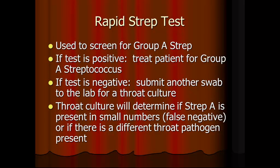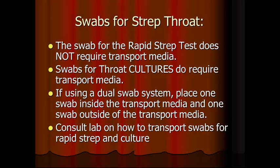Rapid strep tests are used to screen for group A strep. If the test is positive, treat the patient for group A streptococcus. If the test is negative, submit the swab to the lab for a throat culture. Throat culture will determine if strep A is present in small numbers, which can lead to a false negative on your rapid strep, or if there is a different throat pathogen present outside of streptococcus. Swabs for rapid strep tests do not require transport media. Swabs for throat cultures do require transport media. After doing the rapid strep test, that swab is typically discarded. If using a dual swab system, place one swab in the transport media and one outside. Consult the lab on how the transport swab for rapid strep and the culture should be handled.